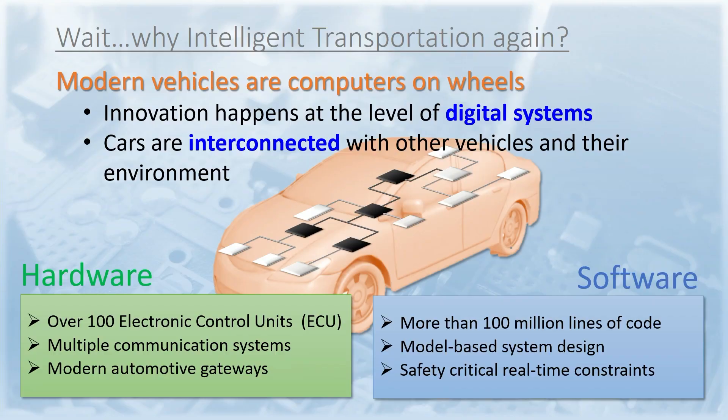In terms of hardware, a car today can have more than a hundred electronic control units. Each of those ECUs is a compact computer that is able to communicate with other ECUs, sensors and actuators, and special automotive gateways. In terms of software, there are over millions of lines of code running on the microprocessors of those ECUs. Such a huge amount of code cannot be easily written by a few programmers, but rather requires a sophisticated model-based system design.